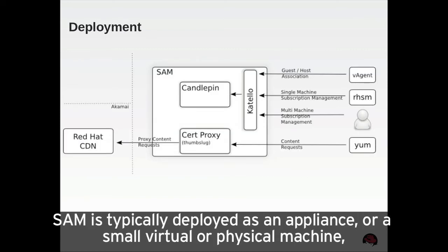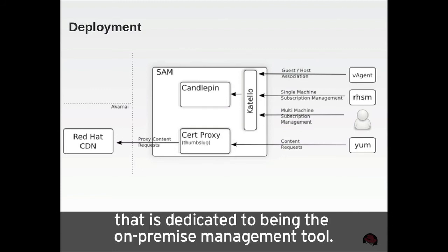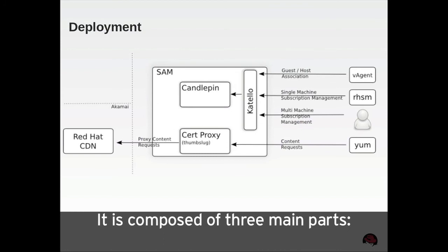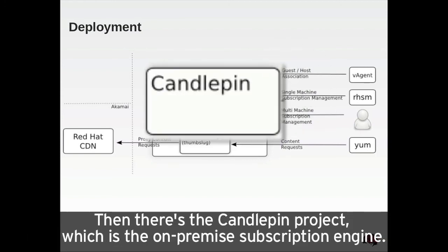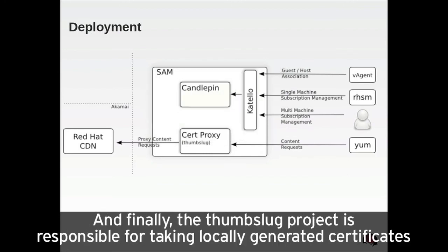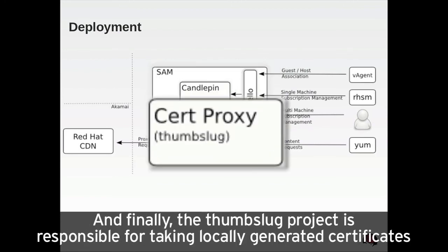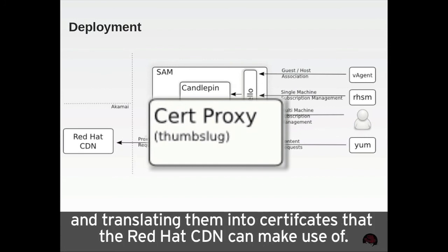SAM is typically deployed as an appliance or a small virtual or physical machine that is dedicated to being the on-premise management tool. It is composed of three main parts: the Katello project, which provides a UI, a REST API, and back-end for the command line tools; the Candlepin project, which is the on-premise subscription engine; and finally, the Thumbslug project, which is responsible for taking locally generated certificates and translating them into certificates that the Red Hat CDN can make use of.